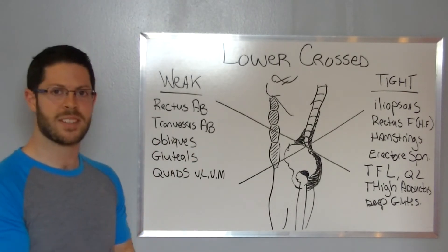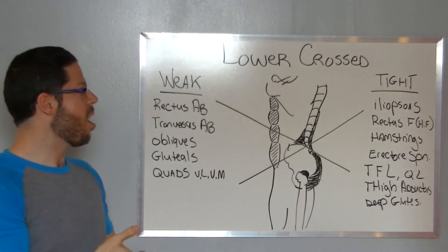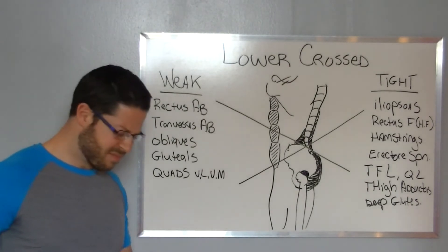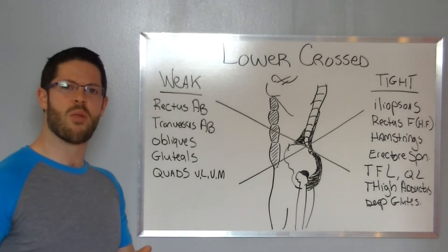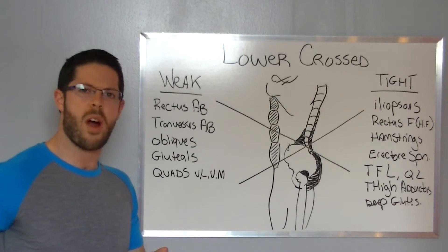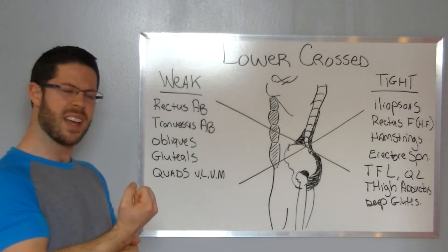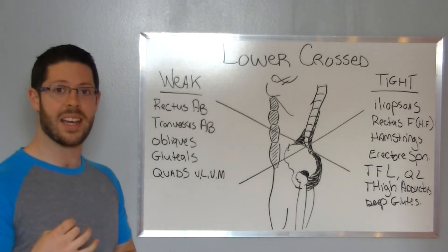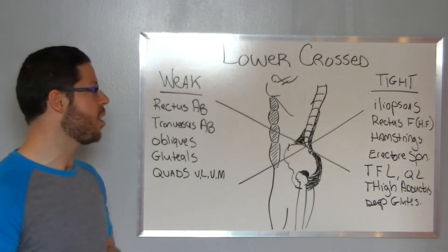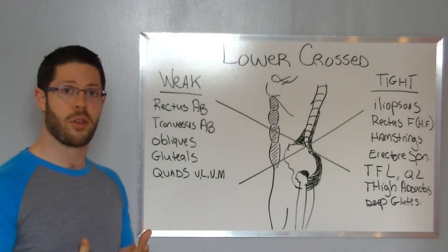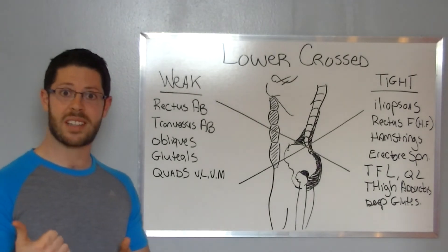Now the opposing side, the tight and facilitated side, are the iliopsoas, that big hip flexor that runs from the lumbar through and attaches on the femur that lifts up the leg. That gets tight and facilitated. Rectus femoris, another powerful hip flexor. The hamstrings get tight too.